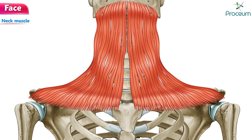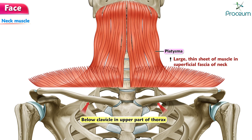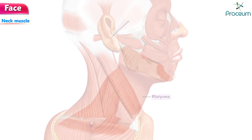Neck muscle: platysma. The platysma is a large, thin sheet of muscle in the superficial fascia of the neck. It arises below the clavicle in the upper part of the thorax and ascends through the neck to the mandible.